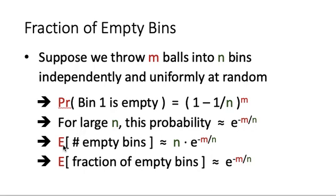The reason is that 1 minus 1 over n will be very close to e to the power minus 1 over n. So as a result, the total will be equal to e to the power minus m over n. By linearity of expectation, the expected number of empty bins will be roughly n times e to the power minus m over n. So the fraction of empty bins is roughly e to the power minus m over n.